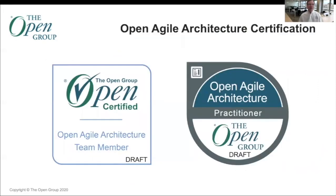Finally, here's a look at some possible certifications. We will foresee an Open Agile Architecture team member certification — that's for people participating in projects. And then also an Open Agile Architecture certification for architects leading transformation, which is what we might call the Open Agile Architecture practitioners. I hope you've gained a little bit of knowledge today about how we plan to go with the Open Agile Architecture ecosystem.